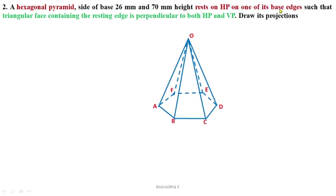It is similar to the previous case — one of its base edges is on HP. For example, if edge BC is on HP, the triangular face containing that resting edge is OBC. That triangular face OBC has to be perpendicular to both HP and VP. Draw edge projections; there are no inclinations with respect to axis or base.